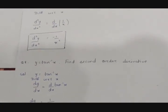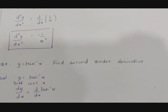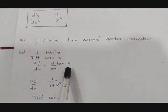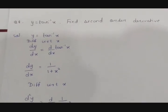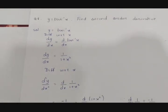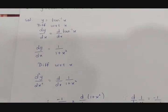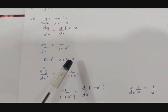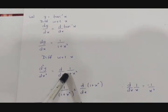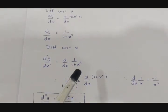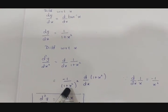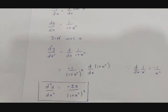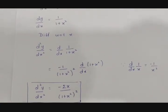Next question: y = tan⁻¹x, find the second order derivative. Differentiating: dy/dx = 1/(1 + x²). To differentiate again, we apply chain rule to 1/(1 + x²). Using the formula that derivative of 1/x is −1/x², here x is replaced by (1 + x²). So d²y/dx² = −1/(1 + x²)² · (2x) = −2x/(1 + x²)². This is the second order derivative.